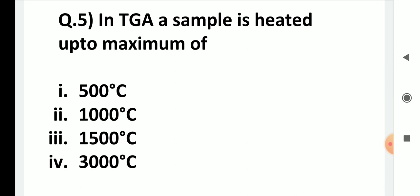In TGA, a sample is heated up to a maximum of 500, 1500, or 3000 degrees. The right answer is 1500 degrees — usually heating is done up to a maximum of 1200 to 1500 degrees. So the third option (1500) is correct.